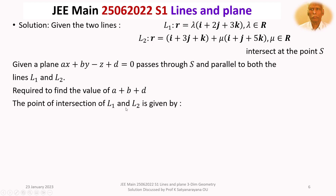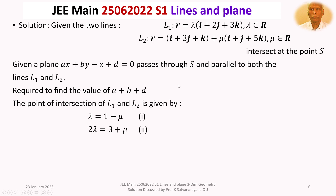First, let us find the point of intersection of L1 and L2, that is the coordinates of S. Any point on L1 is (λ, 2λ, 3λ). Any point on L2 is (1 + μ, 3 + μ, 1 + 5μ). Since they intersect, these coordinates must be equal, giving us: λ = 1 + μ, 2λ = 3 + μ, and 3λ = 1 + 5μ.